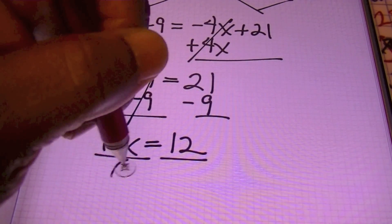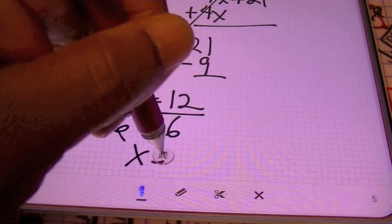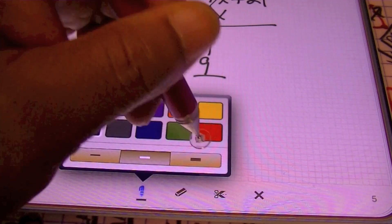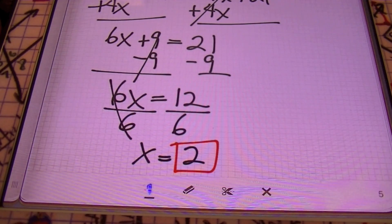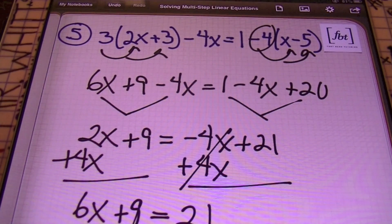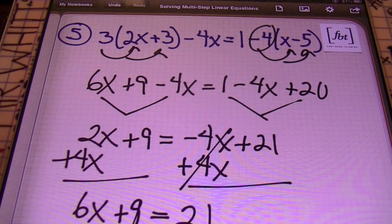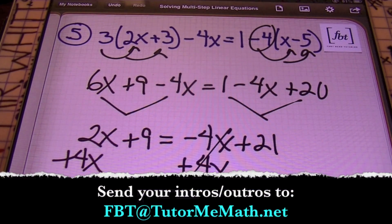I divide both sides by 6 — the 6s cancel out, and X equals 12 divided by 6, which is 2. Got a box for you, ladies and gentlemen. That completes this tutorial on solving multi-step linear equations. We had arrows popping and everything in this video. This is Mr. Witt with Fort Bend Tutoring FBT. Thanks for watching — keep the requests coming, and send in your audio or video file to get in on our intros and outros.